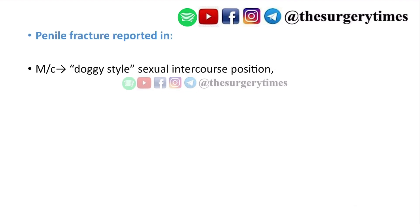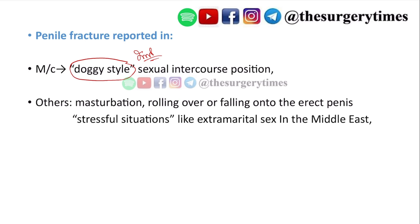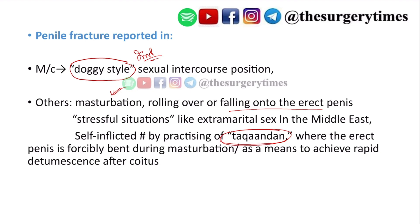The most common cause of penile fracture is the doggy-style sexual intercourse position — this data is from Campbell's urology. Others include masturbation, rolling over or falling onto the erect penis, and stressful situations like extramarital sex. An important term is 'Taqaandan' — a self-inflicted fracture where the erect penis is forcibly bent during masturbation or to achieve repeated erections after coitus.